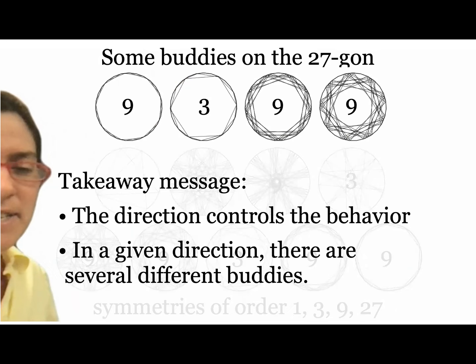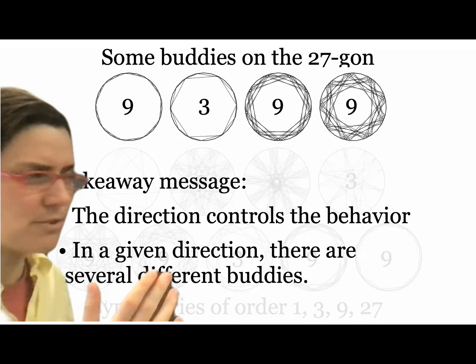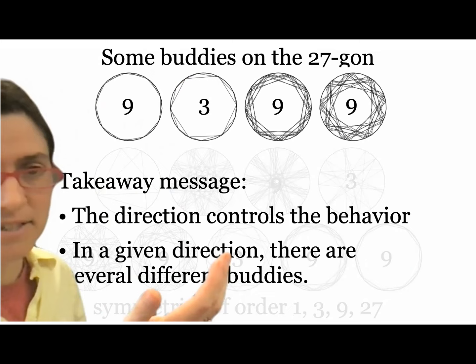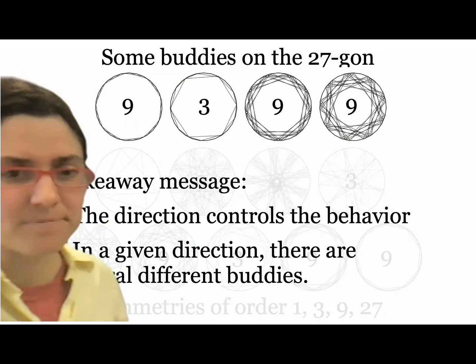The takeaway message: the direction you hit the ball controls the behavior — that's definitely the most important thing. But in a given direction, there are several different buddies. In the case of the pentagon, two different buddies; in the case of the 27-gon, 13 different buddies. It's (number of sides minus 1) divided by 2, which is also the genus of the associated surface.